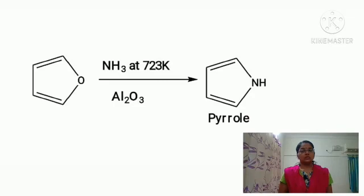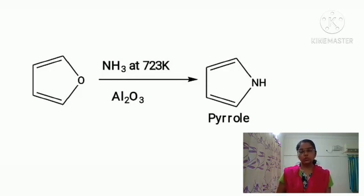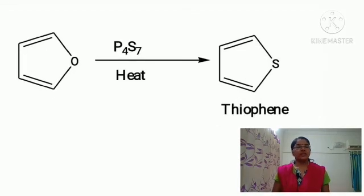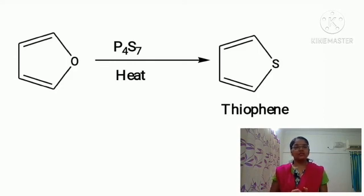From furan we can also prepare other five-membered heterocyclic compounds such as pyrrole and thiophene. When furan is treated with ammonia at high temperature — around 723 Kelvin — in the presence of alumina (Al₂O₃) as catalyst, we get pyrrole. Similarly, when furan is heated with P₄S₁₀, we get thiophene in the laboratory.